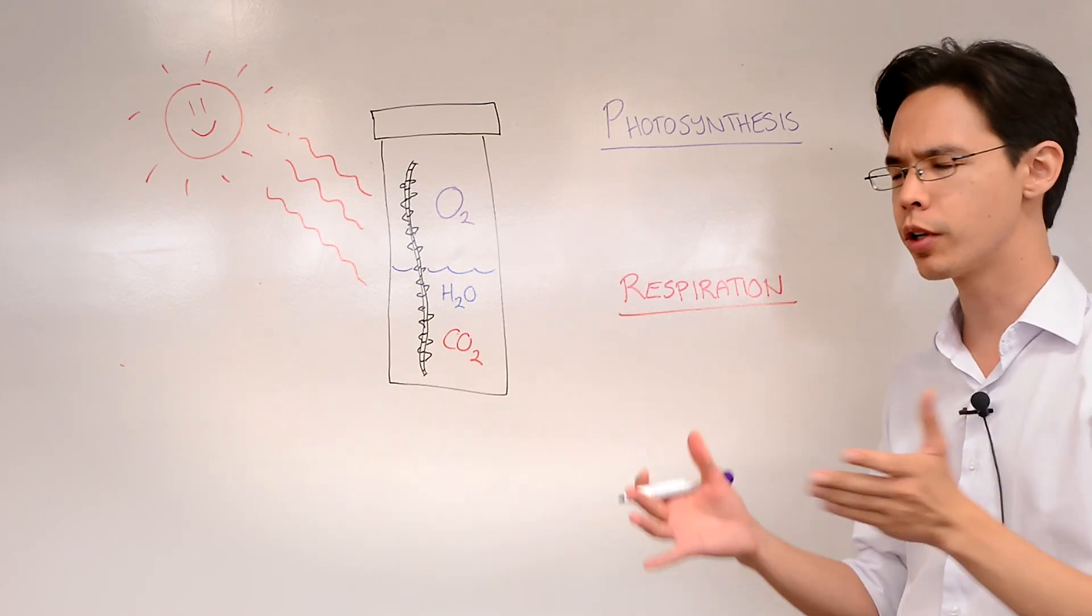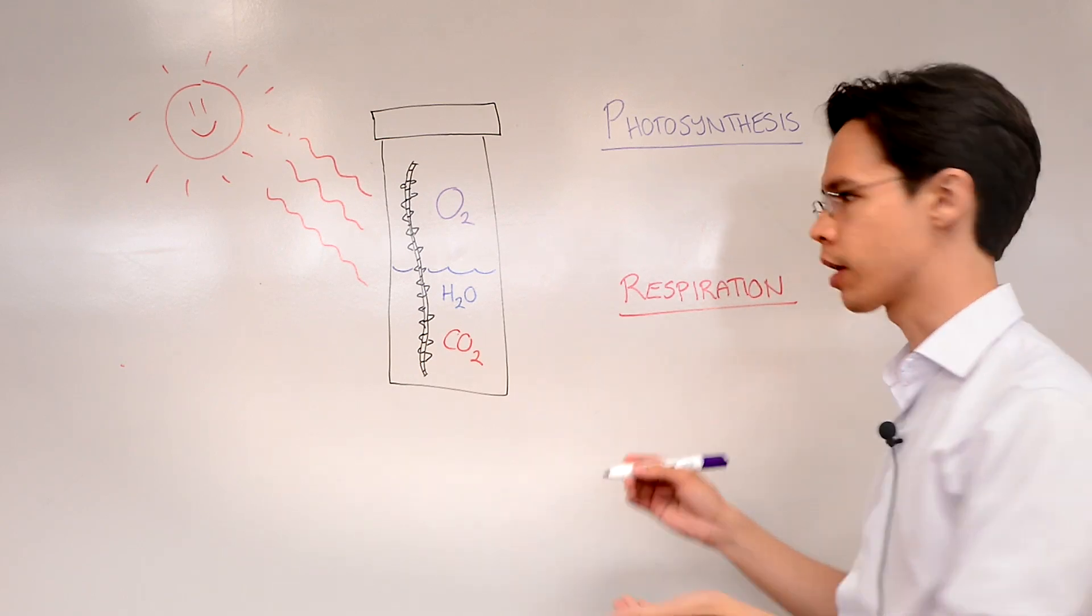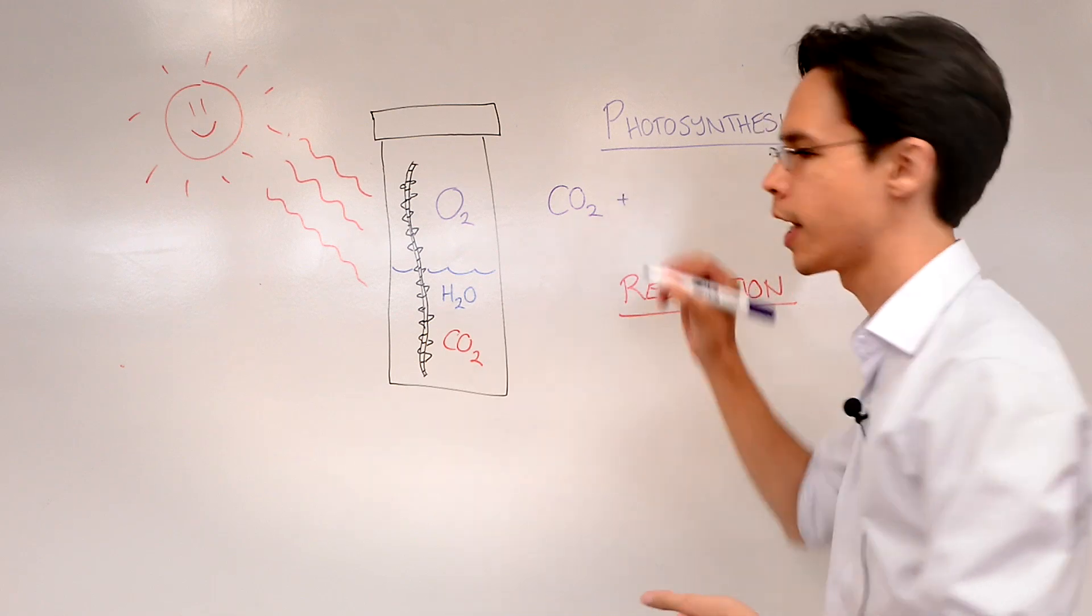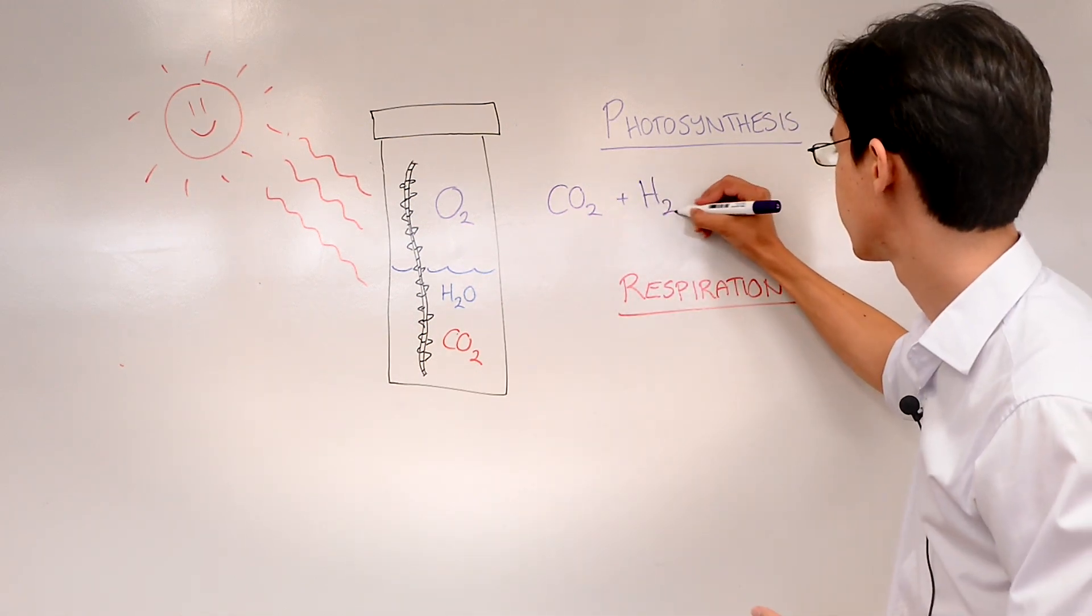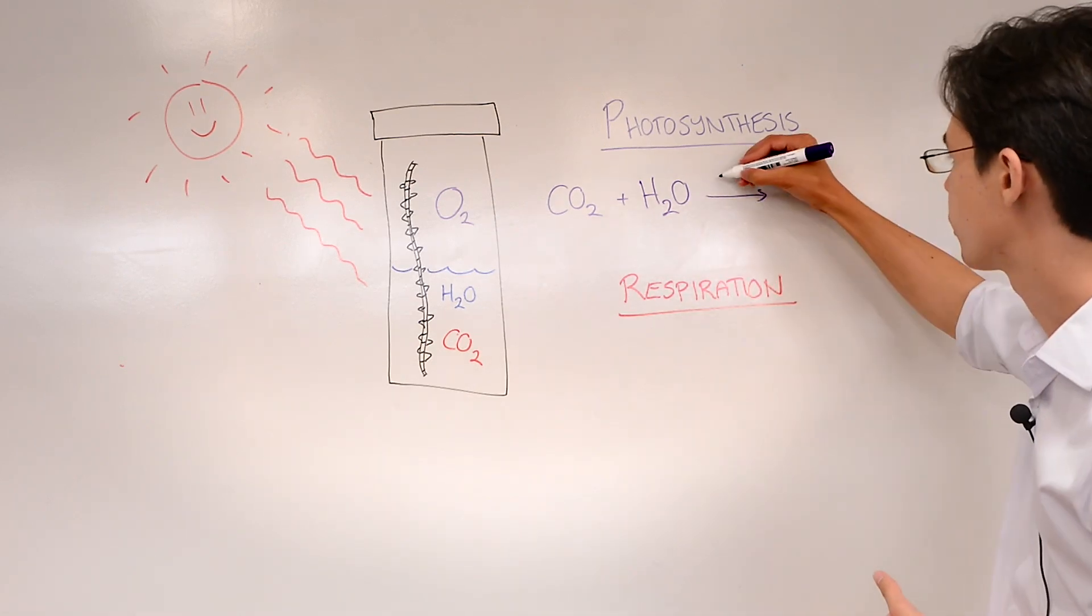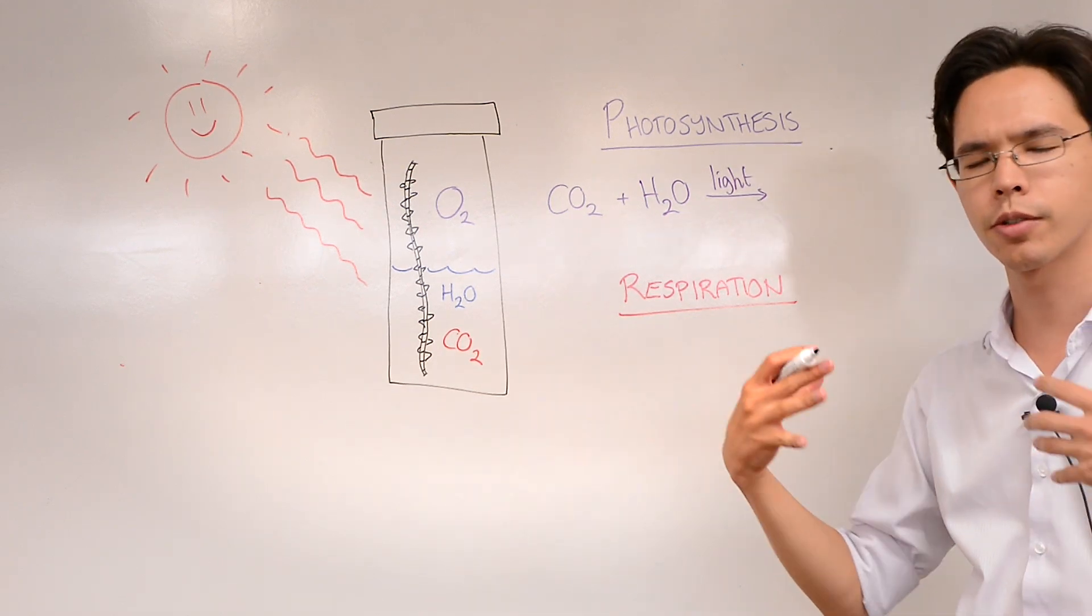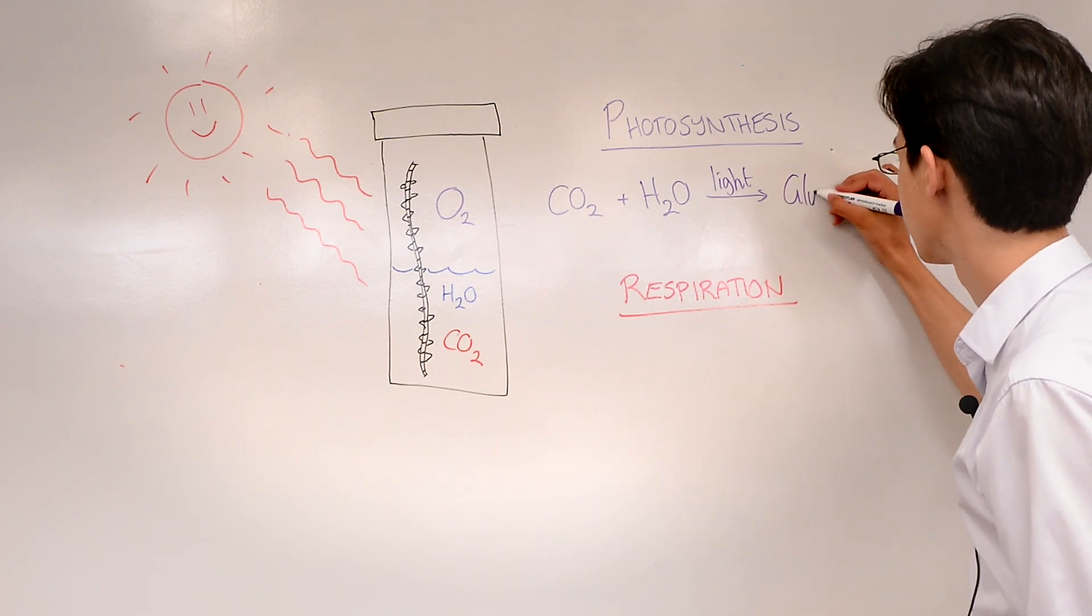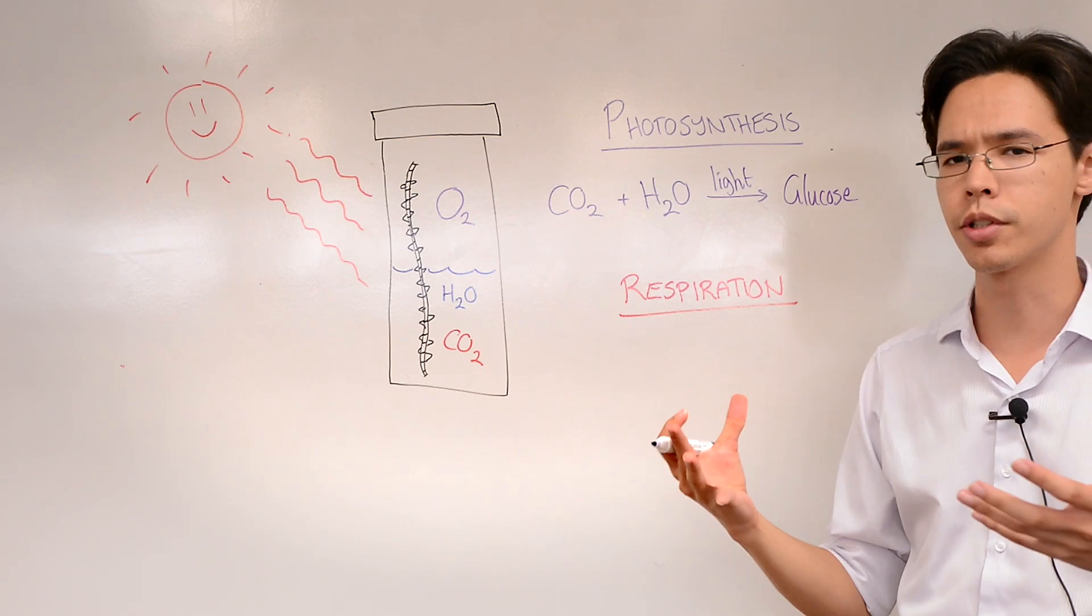So for photosynthesis, we know that the plants will take in carbon dioxide and it will also take in some H2O, which is water. And it will use the sunlight, so I'll put light up here, to create its food, it creates glucose. And it also, as a byproduct, produces oxygen.